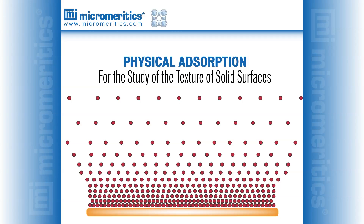Surface area and porosity are important physical properties that influence the quality, utility, and handling of many materials, which often must be carefully engineered to perform specific functions. Differences in the surface area and porosity of a material that otherwise may have the same physical dimensions can greatly influence its performance characteristics. Therefore, it is critically important that these characteristics be accurately determined and controlled.